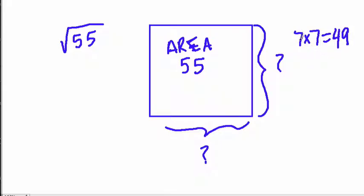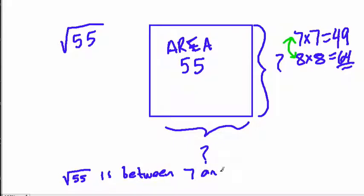If I take 7 multiplied by itself, I get 49. That's too small. I'm trying to find a number times itself that gives me 55. So let me try the next whole number. 8 times 8, which is 64. Oops, that's too big. So we have to find a number multiplied by itself to get 55, and you might realize it's got to be between 7 and 8.